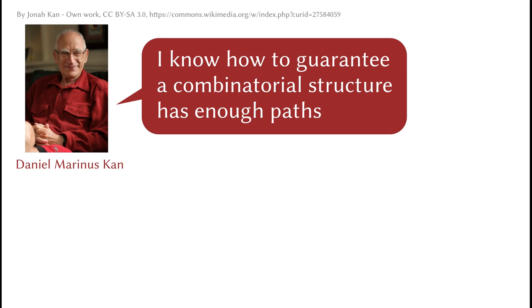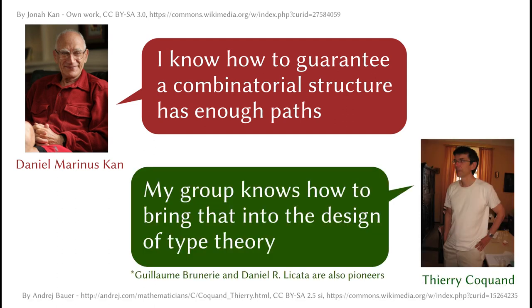This problem was addressed by the Dutch mathematician Daniel Kahn in a different context, who came up with a condition for a combinatorial structure to behave like a topological space. In particular, it would have enough paths. The French computer scientist Thierry Coquant and many other people then found a way to incorporate it into the design of type theory, which eventually led to cubical type theory.